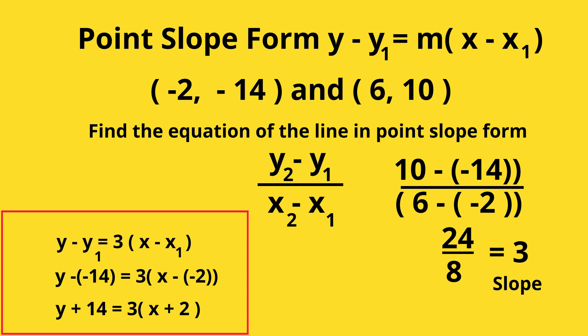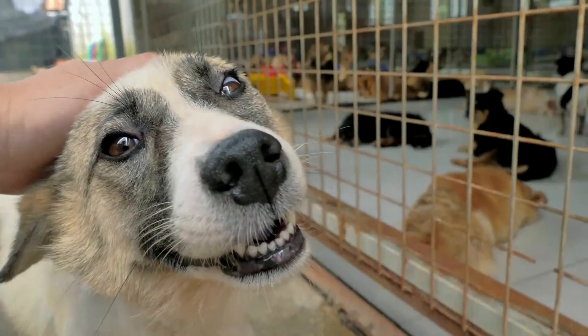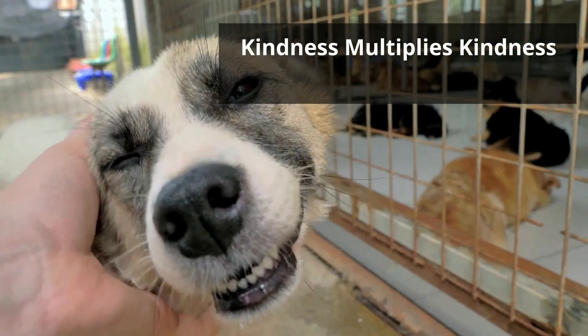There we go. A couple examples of point-slope form. Thanks for watching and remember, kindness multiplies kindness.